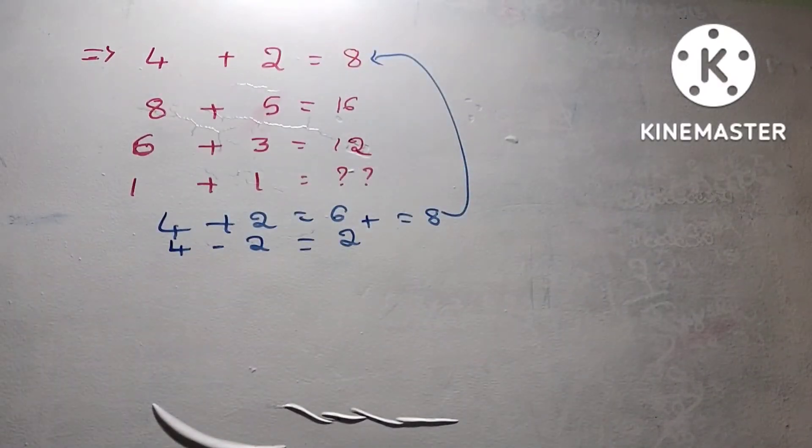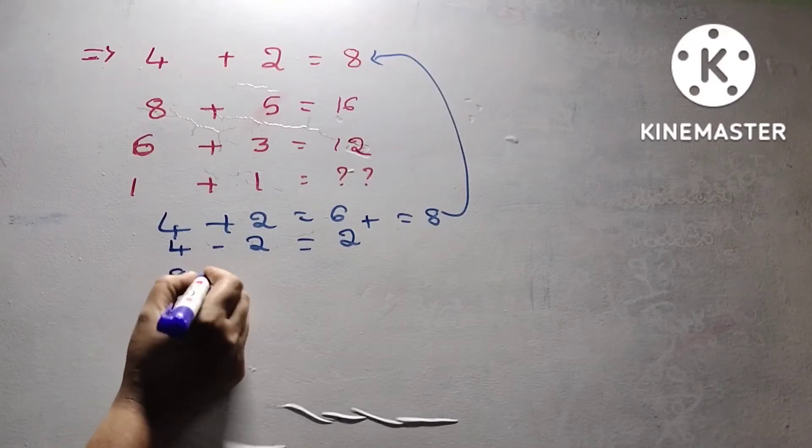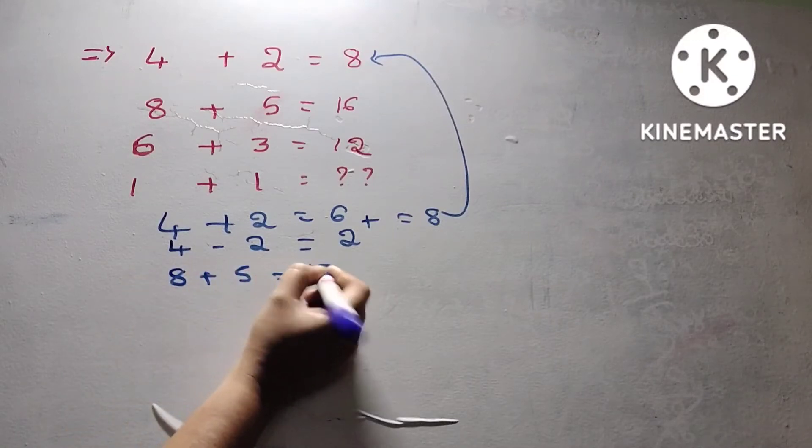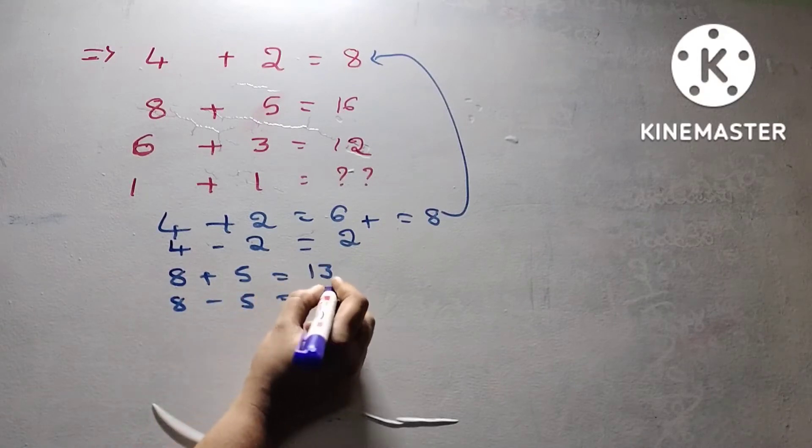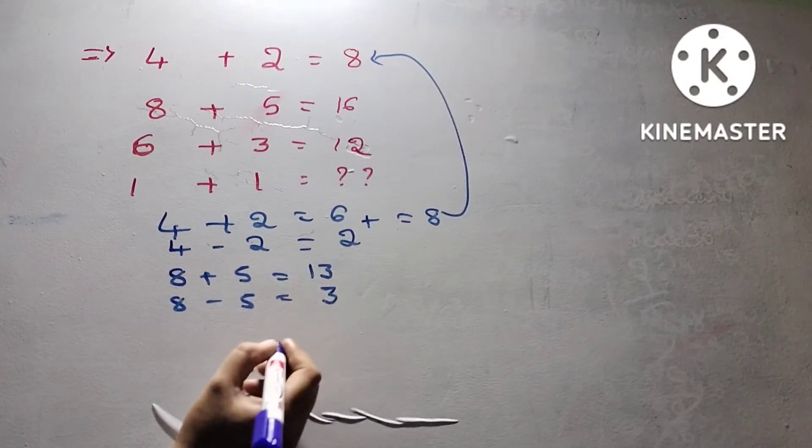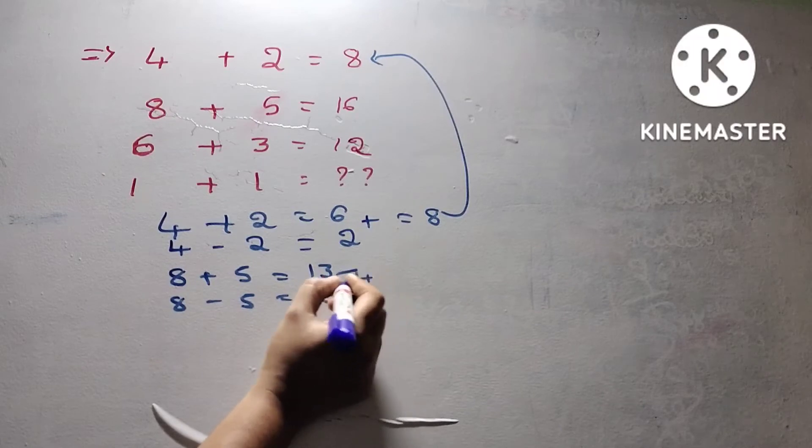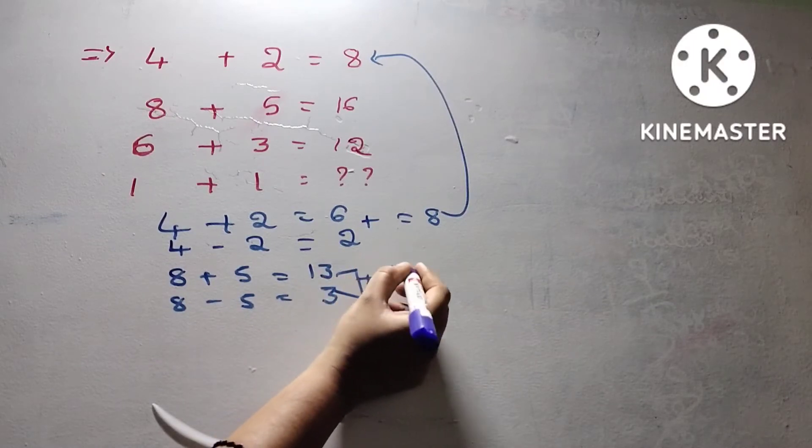Second one: 8 plus 5, we get 13. 8 minus 5, 3. 13 plus 3, 16.